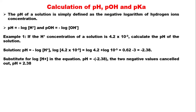For example, if the hydrogen ion concentration of a solution is 4.2 × 10⁻³, you are required to calculate the pH of the solution. Using the formula: pH = −log[H⁺] = −log(4.2 × 10⁻³). By the law of logarithms, this becomes −(log 4.2 + log 10⁻³).